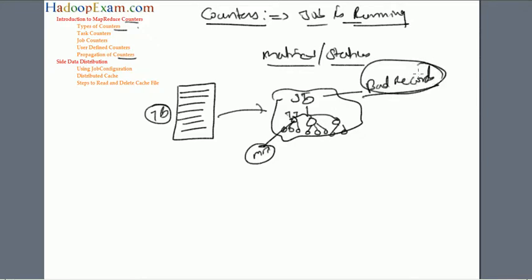I'm giving a simple example of bad records, but there could be any other condition. For instance, if your record has a country value of 'US' you might want to count it. Your input file has millions of records and you want to find how many records contain 'US' as a value. You can define counters to get this kind of information.